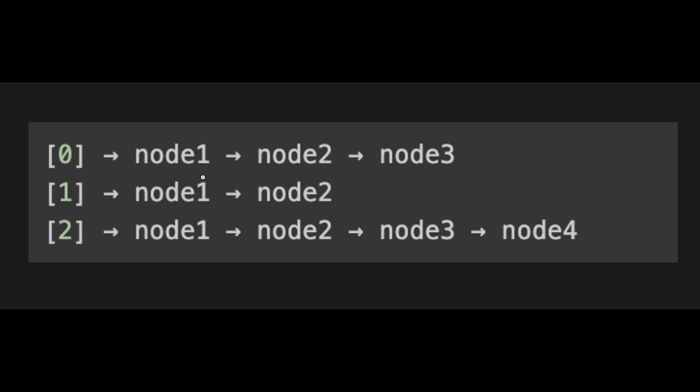Why do we use a linked list? Because an array can only keep one piece of data at one index. But there is a possibility that we might have the same hash key with different data, in which case we need to put multiple items in the same place. That's why we need to connect each data with links.